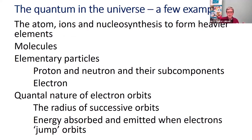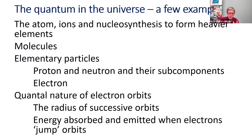This quantal nature also exists in the universe we talked about last week — atoms, or in stars, because of heat they're ions — and the whole process of synthesizing heavier metals from lighter ones. Then there are molecules, the combination of atoms, and the elementary particles within an atom. Next week we'll talk about the proton, neutron, and electron and beyond. The electron orbits are quantal: there are specific radii for successively further-out orbits, and energy is absorbed and emitted when electrons jump from one orbit to another.